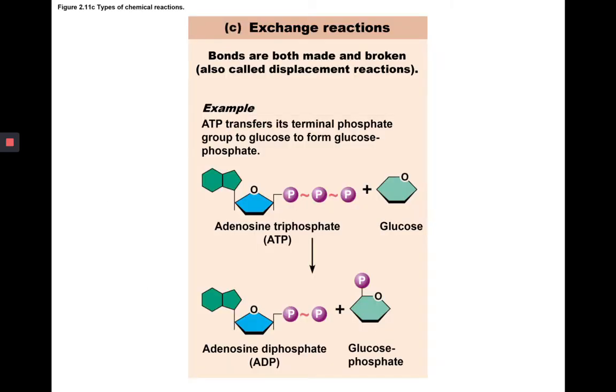Here's an example of an exchange reaction. Now, just the breaking of ATP would be a decomposition reaction, but when we group it with the oxidation of glucose, it becomes an exchange reaction, whereby we break off the terminal phosphate from ATP, or adenosine triphosphate, and add it onto oxygen. So that would be a displacement reaction, which is also known as an exchange reaction.